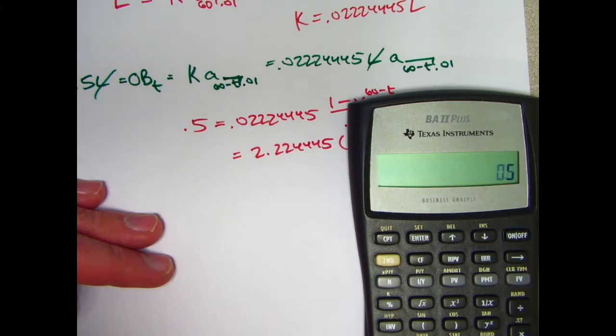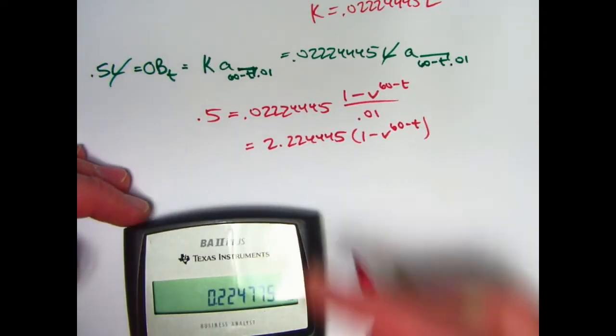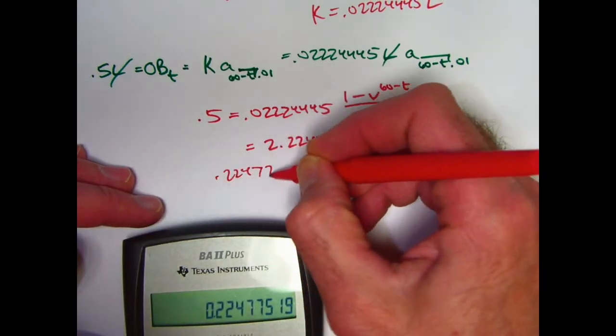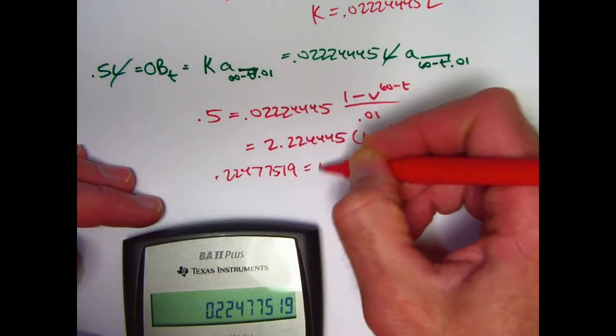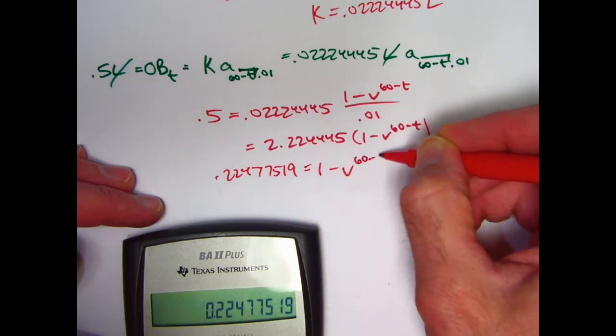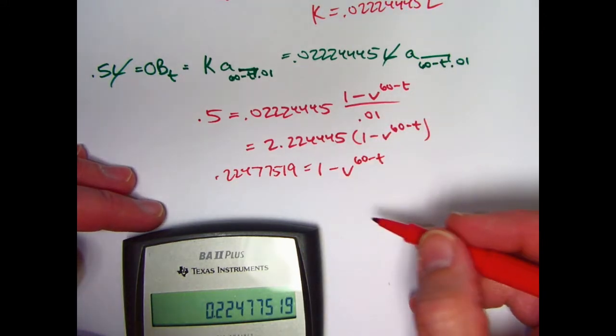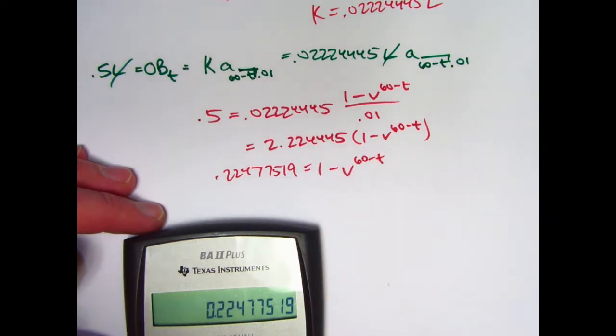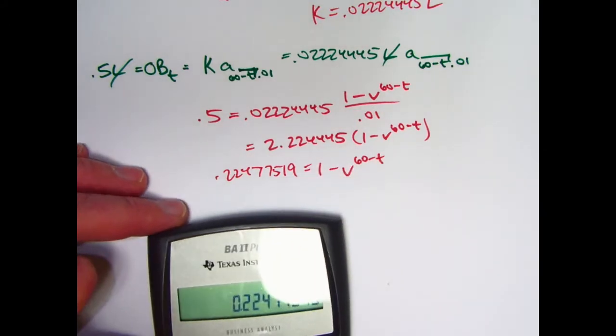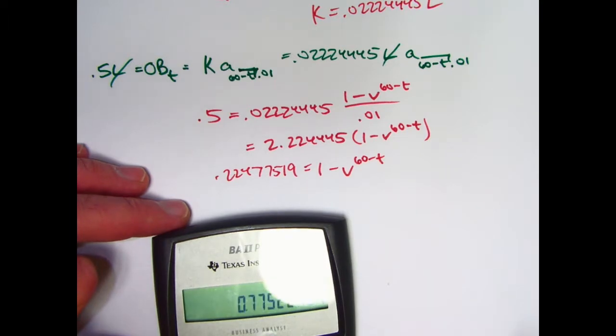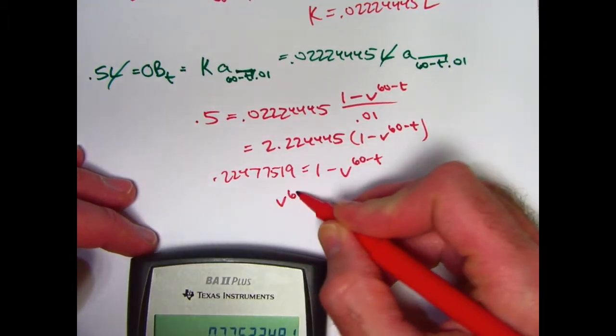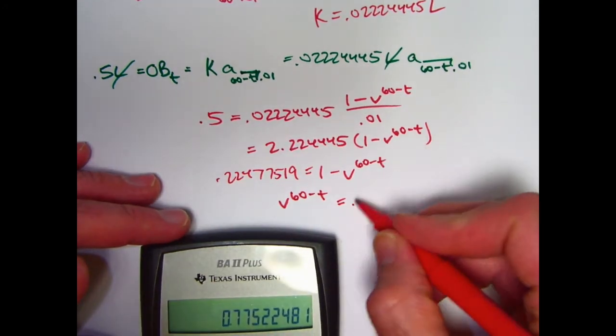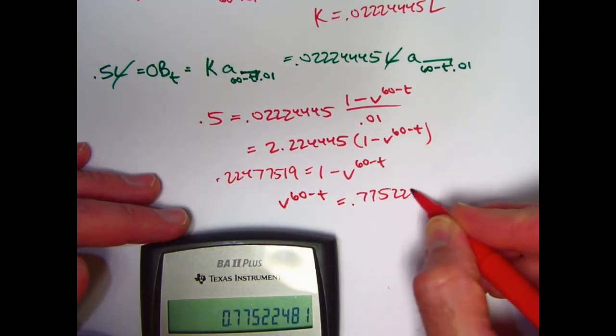Multiply it by 0.5. And on the left side, you get 0.22477519. Solve for V to the 60 minus T. So add that to both sides and subtract this 0.22477519 from both sides. Looks like V to the 60 minus T is 0.77522481.